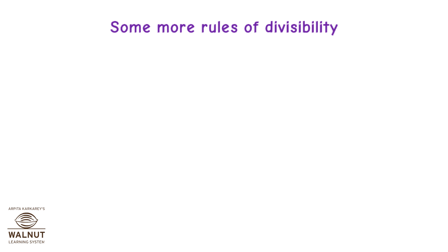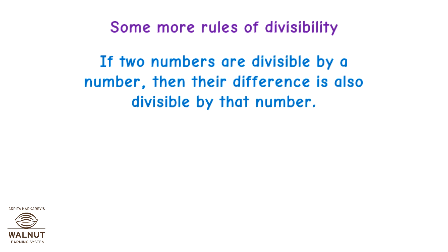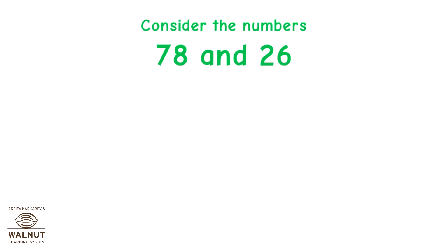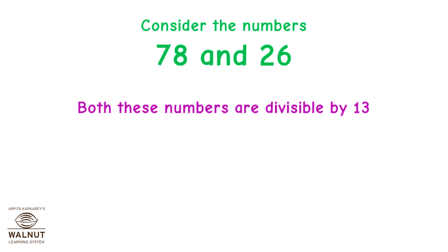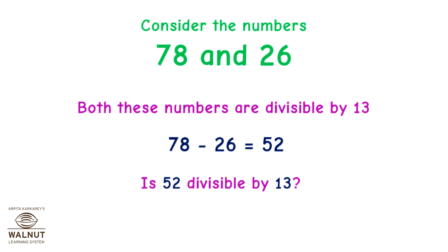Some more rules of divisibility: if two numbers are divisible by a number, then their difference is also divisible by that number. Let's see how that works. Consider the numbers 78 and 26. Both are divisible by 13. 78 − 26 = 52. Is 52 divisible by 13? Yes.